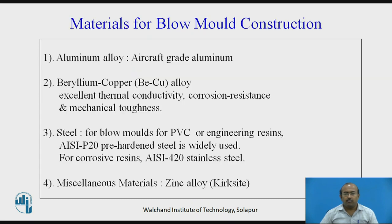Material for blow mold construction. For mold manufacturing, these are the varieties of materials that can be considered: aluminium alloy, aircraft grade aluminum, beryllium copper alloy (BeCu alloy), which is used because of its excellent thermal conductivity, corrosion resistance, and mechanical toughness. Steel is also used for blow molds for PVC or engineering resins. Miscellaneous materials like zinc alloy can also be used.